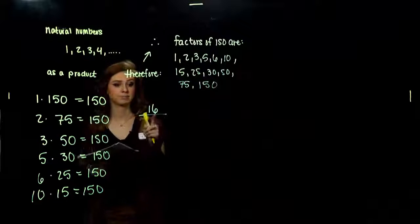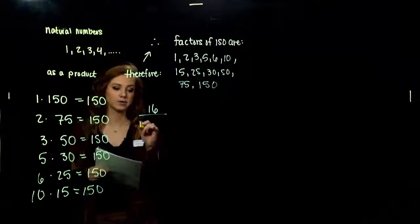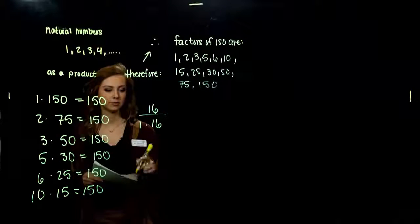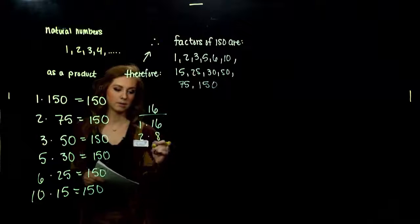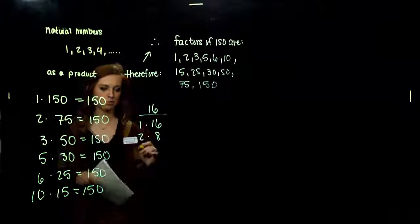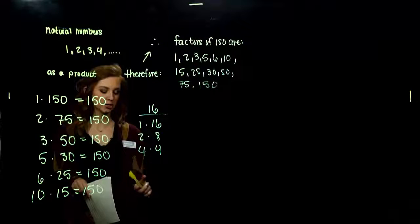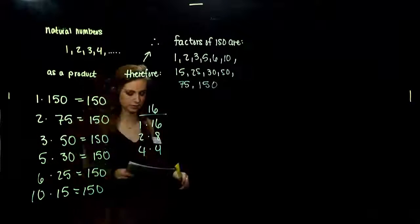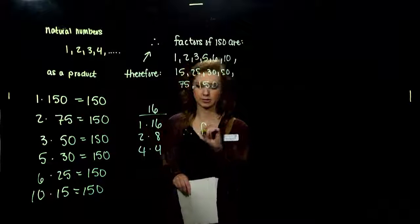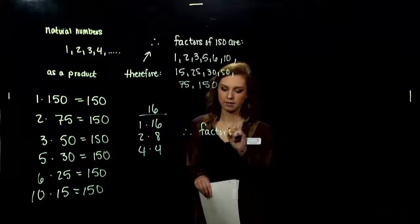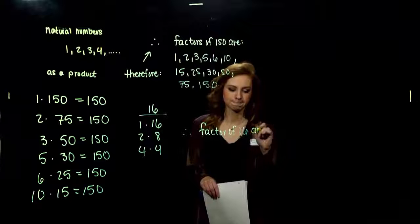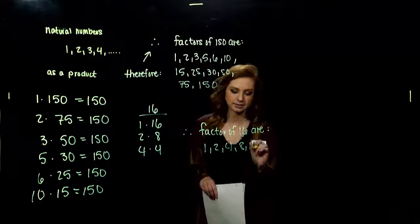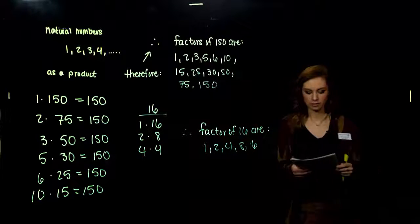How can I break up 16? What factors am I looking at? Always one and itself. Pretty boring. Starting up from one. 2·8, we can break it up. 4·4, anything larger, if I choose like eight, for example, we're back to 8·2. So we don't want to write any repeats. Therefore, the factors of 16 are 1, 2, 4, 8, 16.